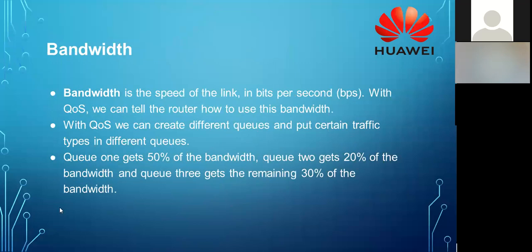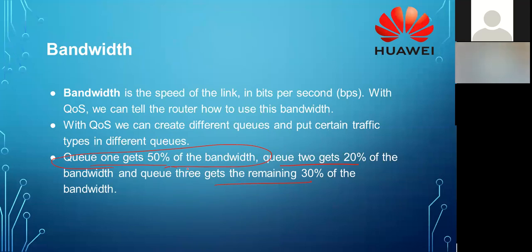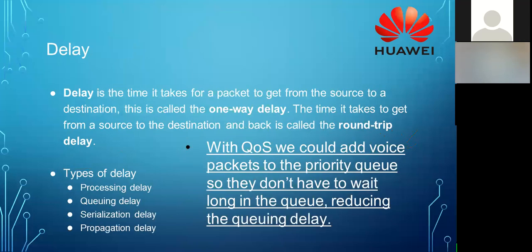You can create queues with different bandwidth allocations — say 50% for one queue, 20% for another, 30% for the rest — and place traffic accordingly. Voice gets the priority queue, TCP data gets a secondary queue because it is bandwidth-hungry, and remaining unknown traffic gets the rest. This bandwidth tuning is what QoS is all about.